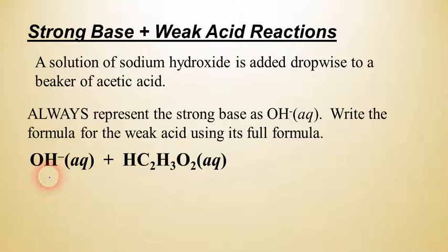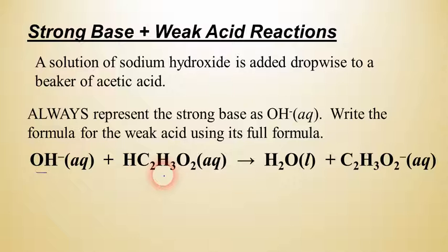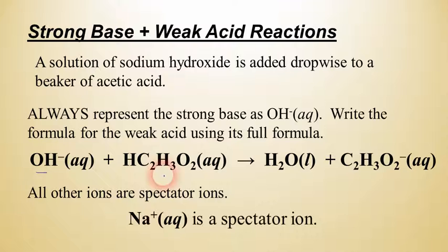In writing the products, you want to remember that since hydroxide is a base, one of the products is going to be the conjugate acid of that base, which is water. And then acetic acid, of course, is an acid, and so the other product of that is going to be the conjugate base, which is the acetate ion. And like I said, all other ions are spectator ions. So that means that the sodium ion, in this case, would be a spectator ion.